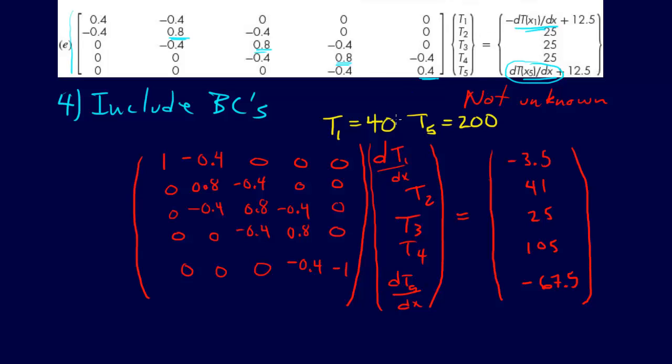But in this case, we were actually given the temperature at each of the endpoints here. That's represented, so T1 was equal to 40 and T5 was equal to 200.